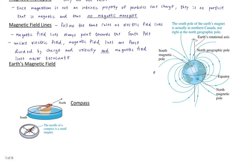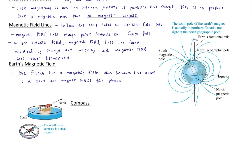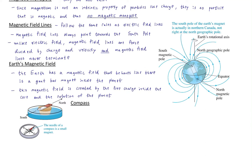The Earth has a magnetic field that behaves almost like there is a giant bar magnet inside the planet. The magnetic field is created by the free charge inside the core — the molten, mostly iron core — and the rotation of the planet. Those are the necessary ingredients to create the moving charge that creates the magnetic field. There are certain necessary ingredients a planet needs to have a strong magnetic field, and our terrestrial planet meets those.